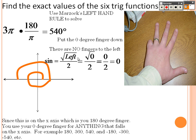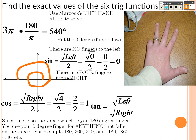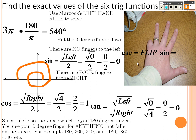Using the hand: no fingers to the left, so sine is 0 over 2, which is 0. Cosine — 4 fingers to the right, so root 4 over 2 equals 1, but because it's on the negative x-axis, it's actually negative 1. Tangent is square root of the left — nothing — over square root of the right, which is 4, giving 0 over 2, which is 0.